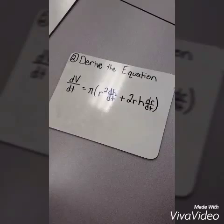dV/dt equals π times r² dh/dt plus 2rh dr/dt.